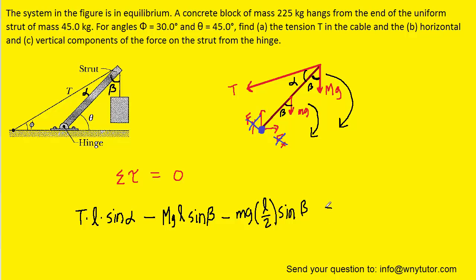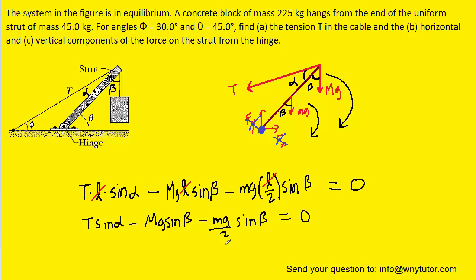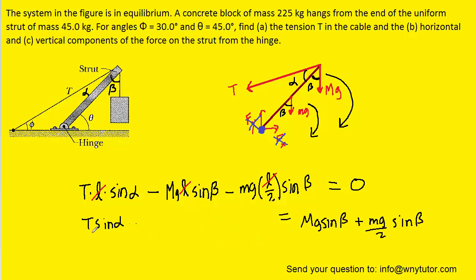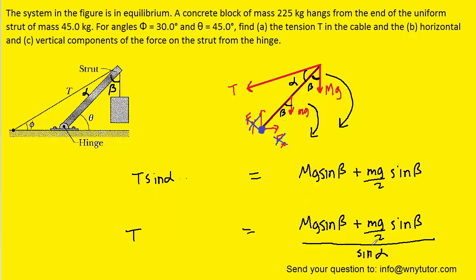We set the sum of the torques equal to zero and solve this equation for the tension T. Before doing so, we can note that each term can be divided by l, so the l's cancel out. Then we add the two negative torque terms to the right-hand side and divide both sides by sine of alpha. We're almost ready to plug in the known values — the masses were given, and we need angles beta and alpha.